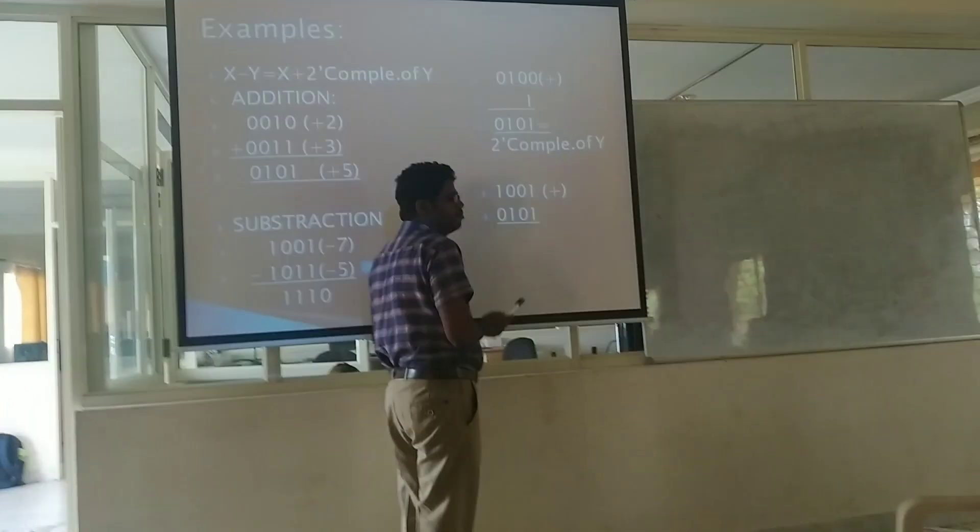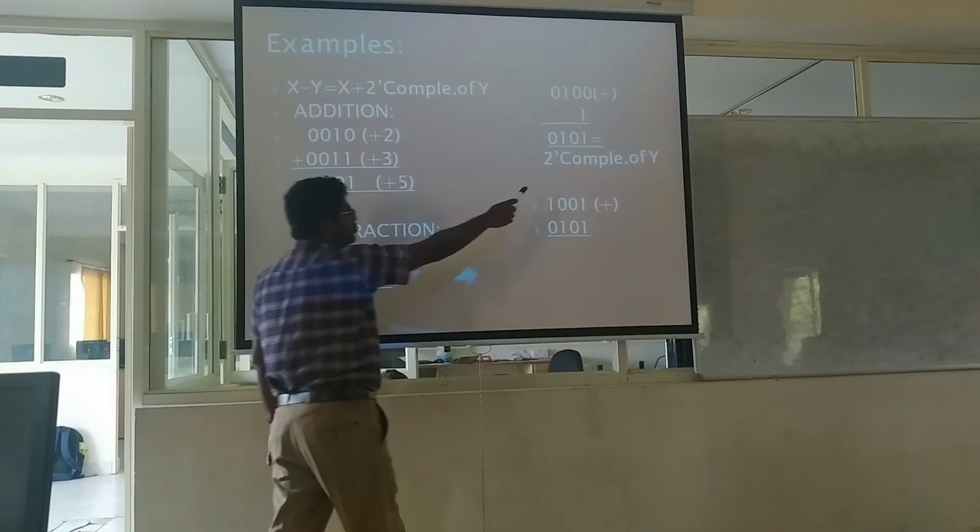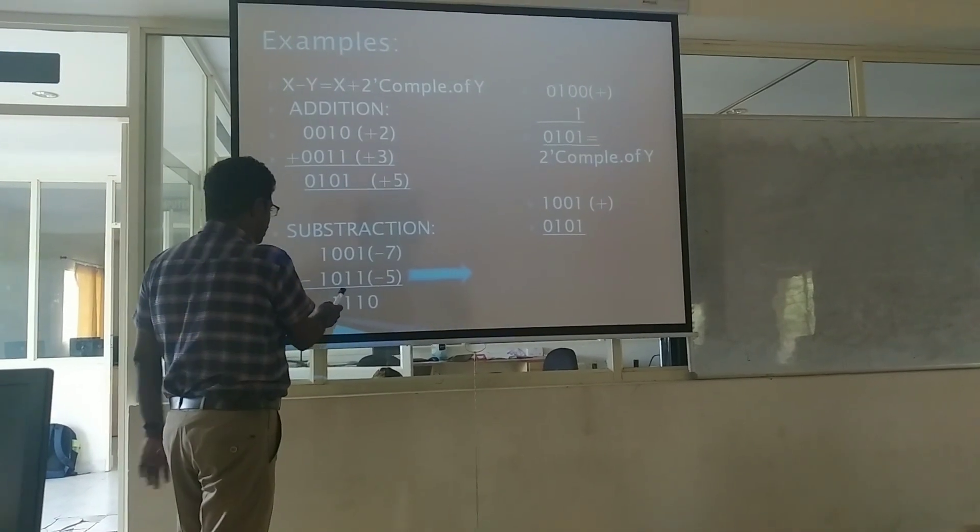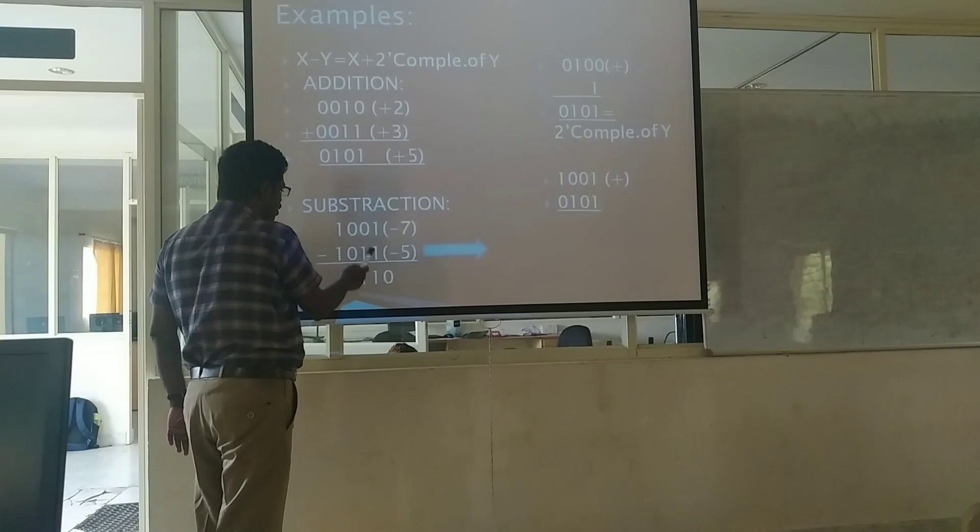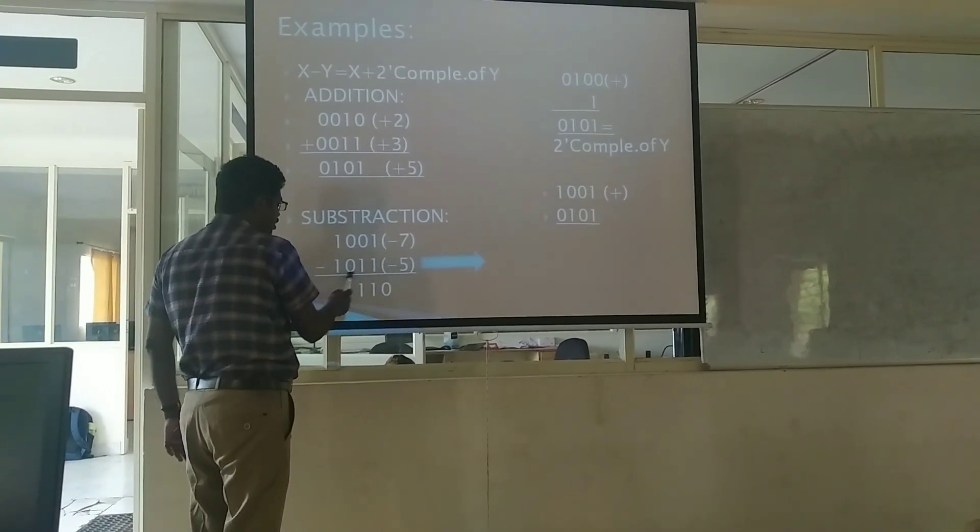Now we can do x plus y operation. So x value already given is 1001. What do you have to get for 2's complement? That is 0101. So I am adding them here. If you add it, you will get 0, 1, 1, 0. Then again 1, again 1, again 1. So we will find the answer as 1110.